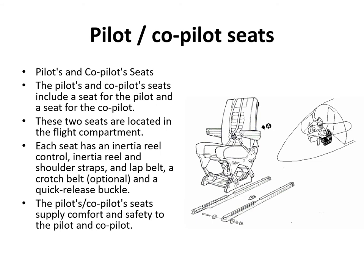Pilot and co-pilot seats are pretty standard and you will find this information in the Bombardier manuals. Pretty much anything in the cockpit furnishings-wise you'll find in the Bombardier manuals, because that's standard — it's just the cabin that's different. We have crew seats for the pilot and co-pilot in the flight compartment. Each seat has an inertia-reel seat belt and shoulder straps with a lap belt and possibly a crotch belt with a quick-release buckle. The purpose of the seats is to provide comfort and safety for the pilot and co-pilot.